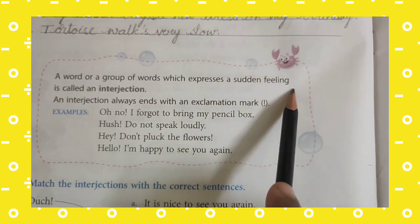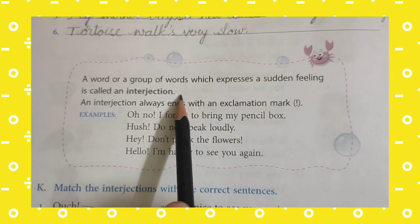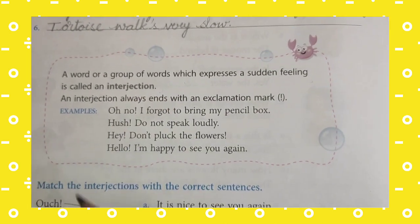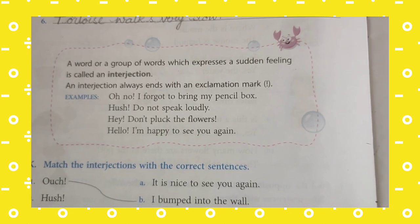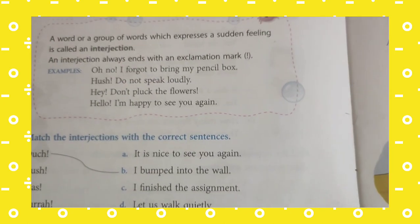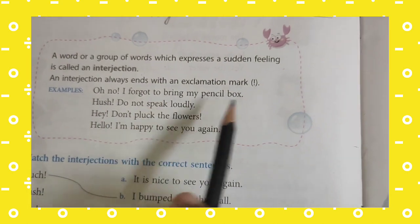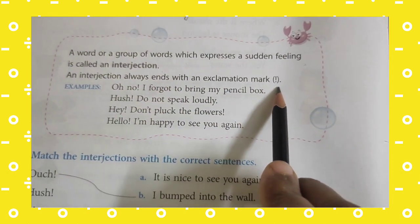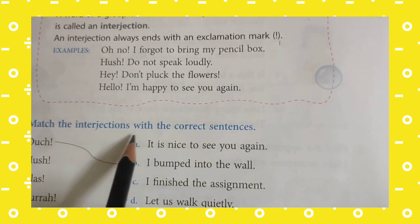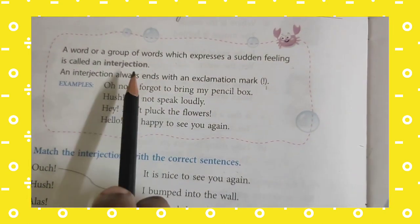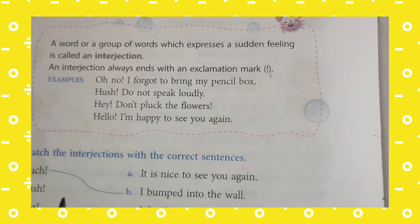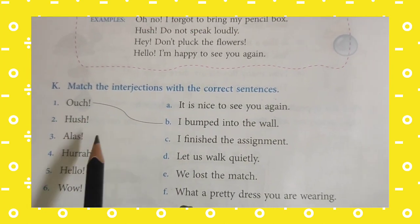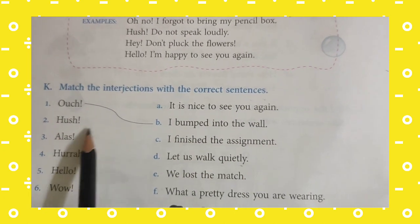A word or group of words which expresses a sudden feeling is called an interjection. Children, look at this — it is a part of speech, and this is the last part of speech. An interjection is a sudden feeling. For example, if somebody hurts their legs, how do you feel? Ouch! It is a sudden feeling and it ends with an exclamation mark. We have already discussed this in our previous classes. Match the interjections with the correct answers.